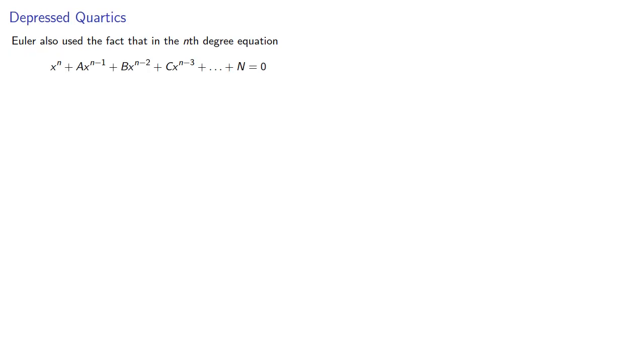Euler also made use of the fact that in an nth degree equation, the n minus first degree term can be eliminated using the substitution y equals one nth a.